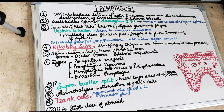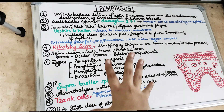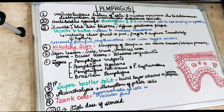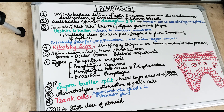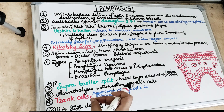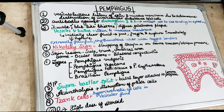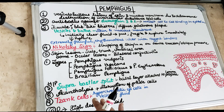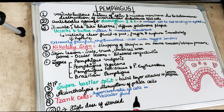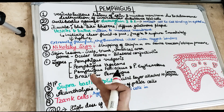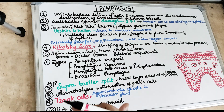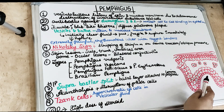Welcome back to another 10 in 10 series, where we cover each topic under 10 headings in 10 minutes. Today's topic is pemphigus, or more specifically the major form: pemphigus vulgaris. This is a vesiculobullous lesion of the skin and mucous membrane wherein there are intraepithelial vesicles or bullae formed, and the basal layer is separated from the above layer of the epithelium.